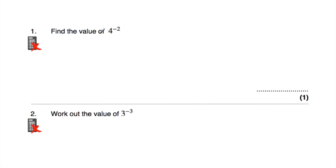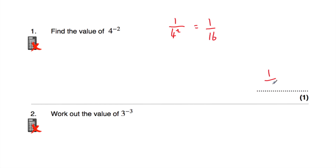Question one says: find the value of 4 to the power of negative 2. When we've got a negative power, we put 1 over and then we change the power to be positive. So rather than 4 to the power of negative 2, we do 1 over 4 squared. 4 squared is 16, so the answer is 1 over 16.